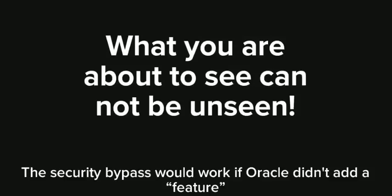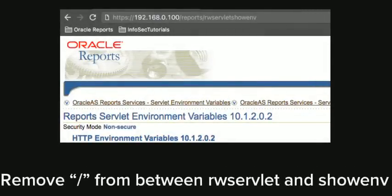We all know that programmers can make serious mistakes, and I have to admit that Oracle Reports did a really fine job putting some bizarre things into the application. The bypass of this security is literally removing a single slash from the URL, and I will show you that next. Here we can see that when you remove the slash from between RW servlet and the command — in this case showENV — it happily displays the information for you, effectively bypassing the security.